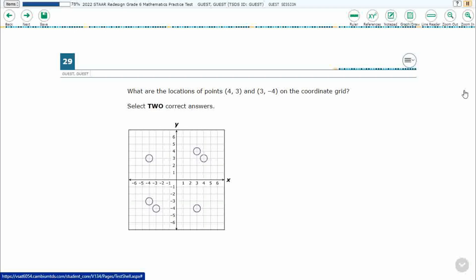So there's no scrolling. This is the entire problem. There is no A, B, C, or D. We need to choose two of these points and they've given us the (4, 3) and (3, -4) and you notice I have to select 2.